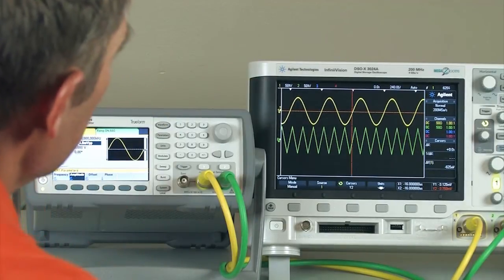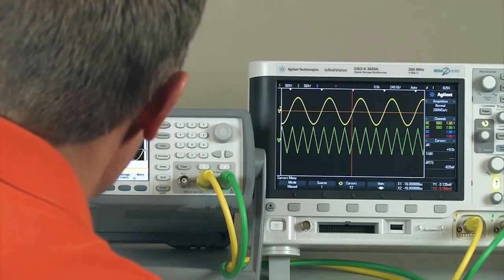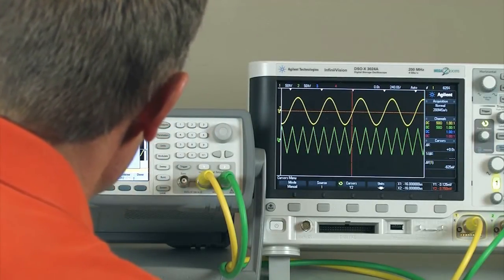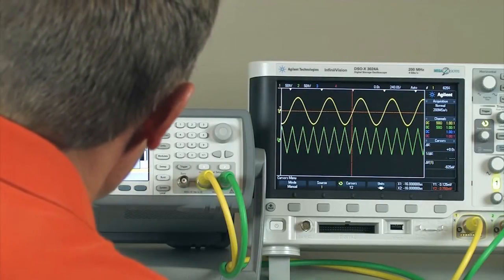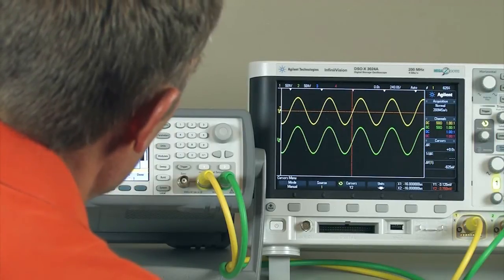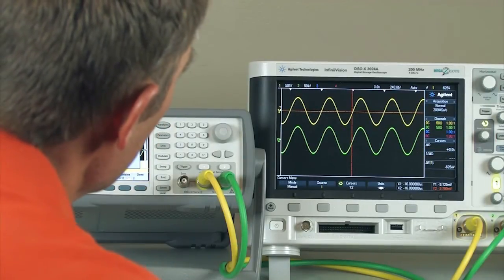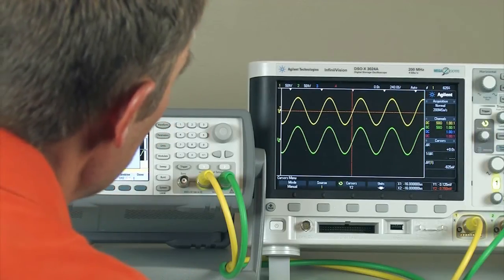We also have a couple special cases for coupling the channels, and that is using the tracking feature. With tracking on, it produces two identical signals, and they're both in phase. As you can see, we now have two identical signals that copied the waveform, the amplitude, and the frequency.